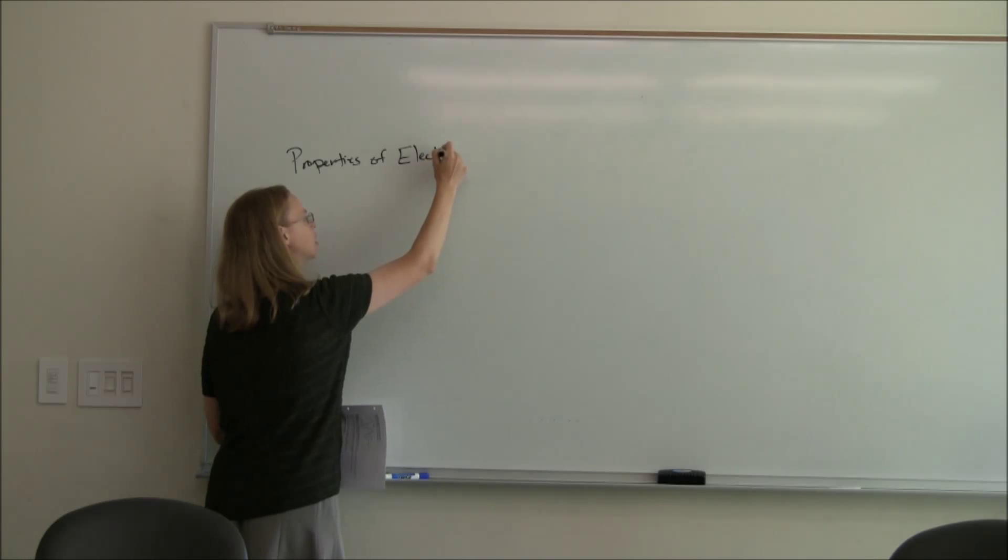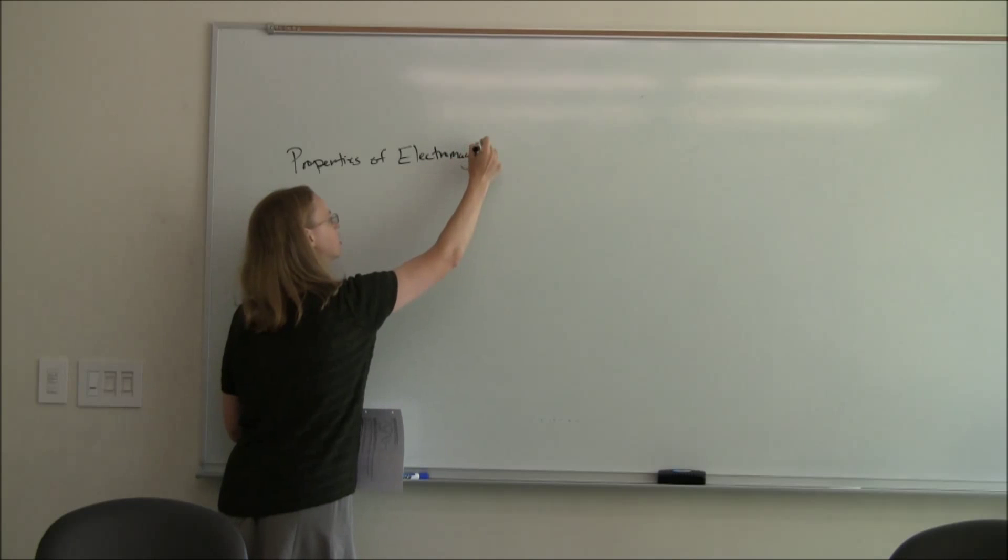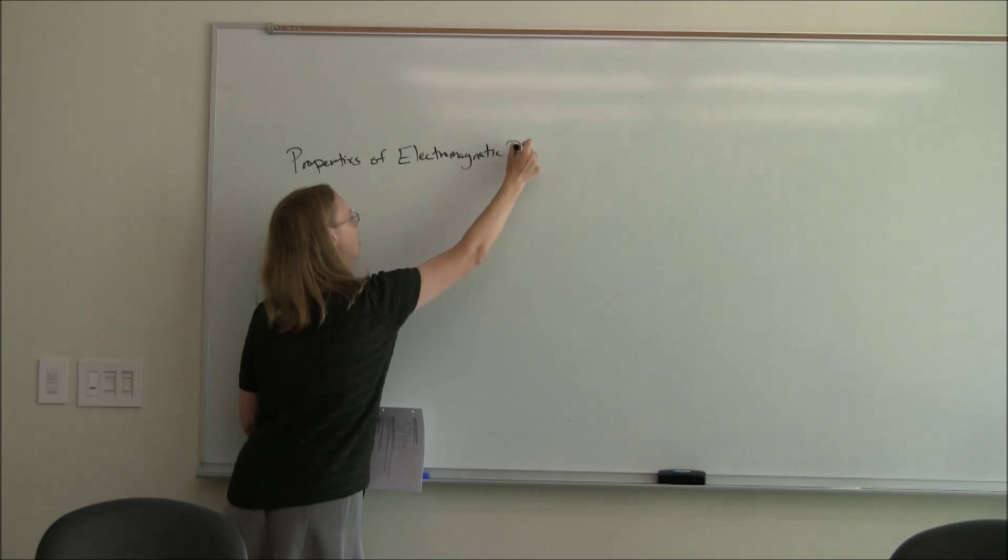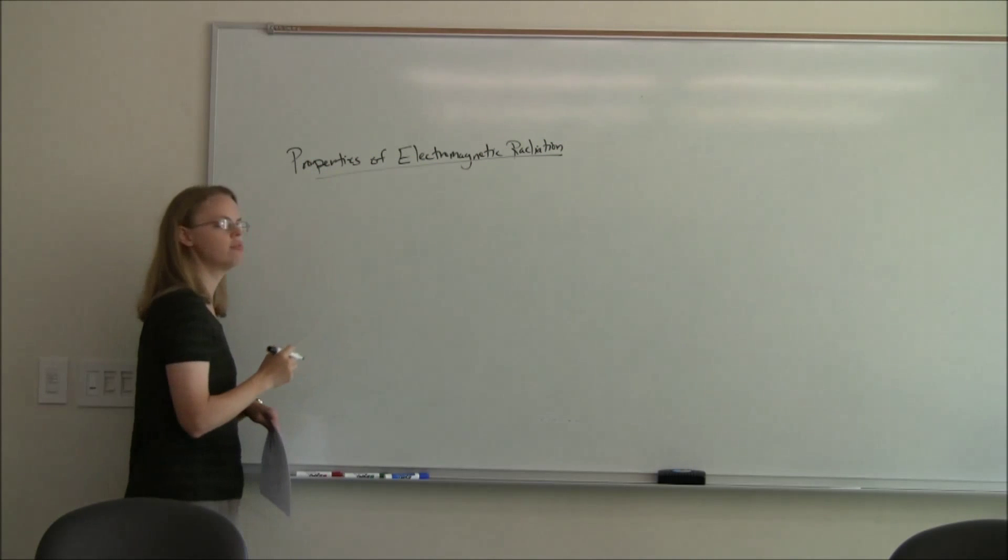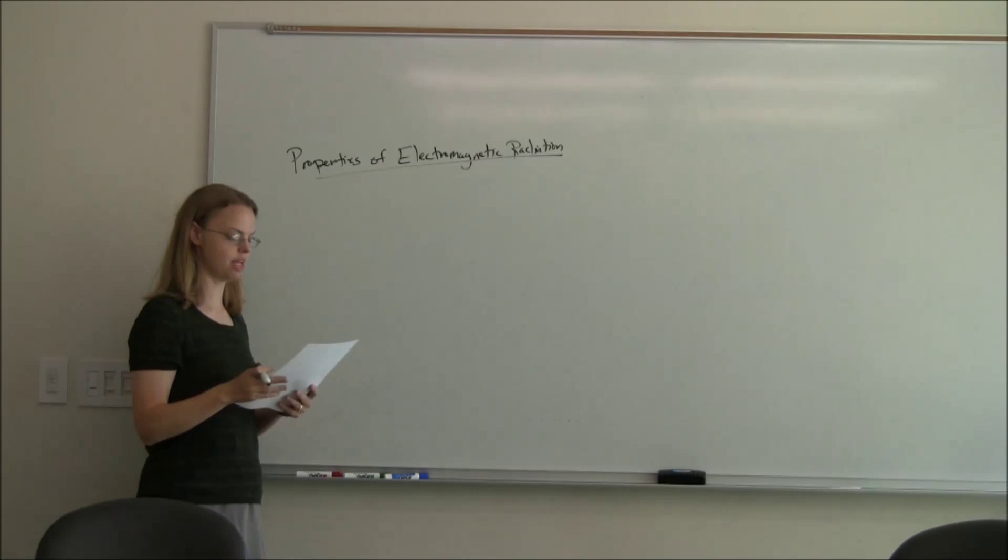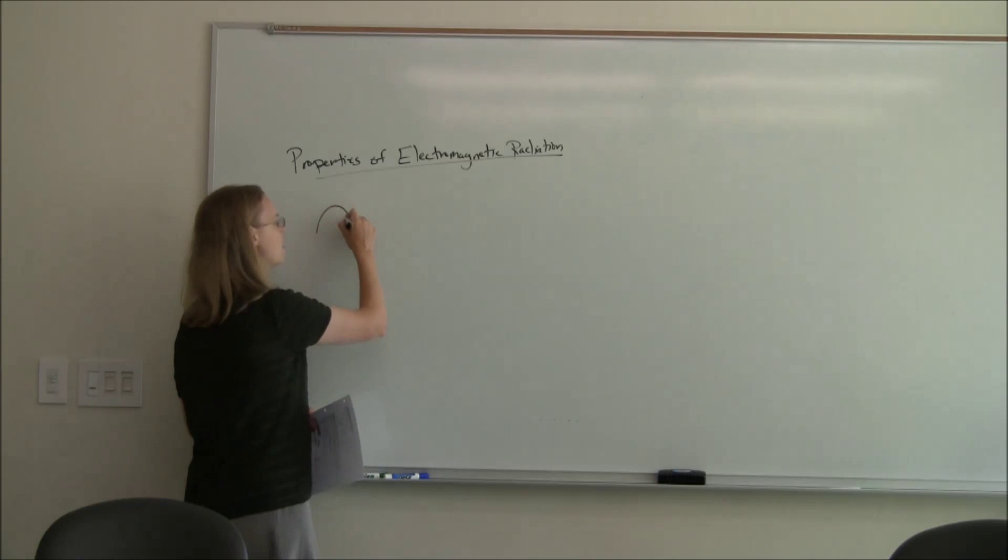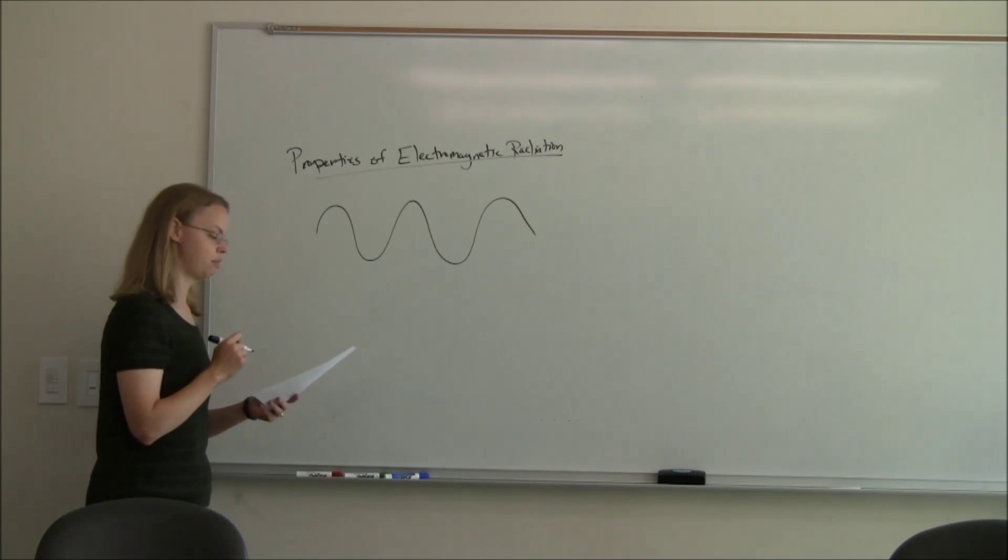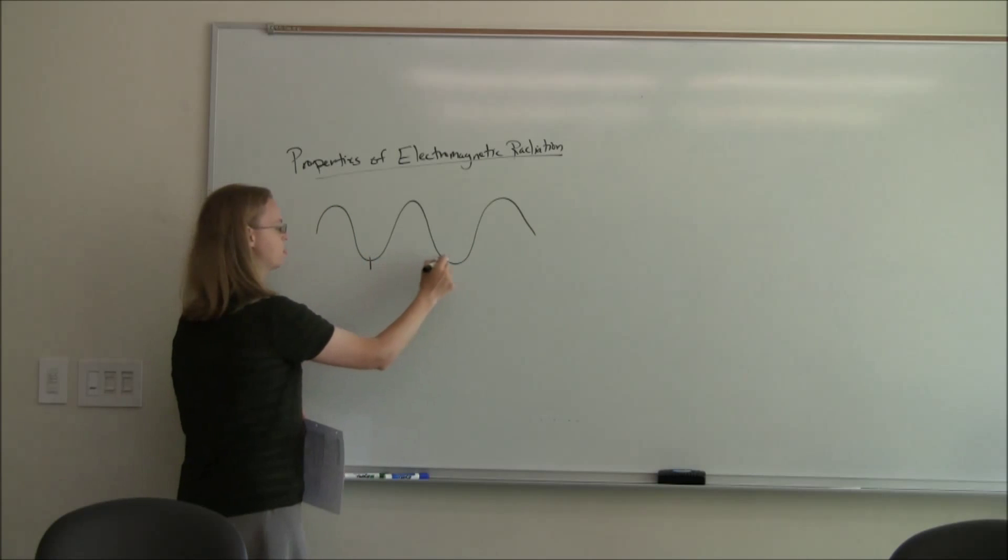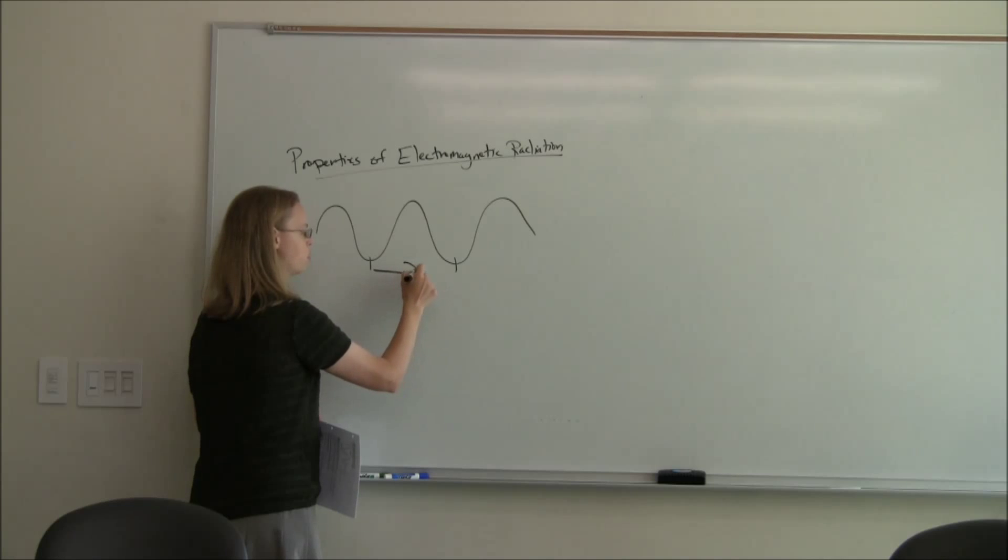We're going to be talking about the electromagnetic spectrum, and I wanted to remind us of just a few properties of electromagnetic radiation. Hopefully these are things you know, but let's think about it. Now we can describe light as a wave. We can describe it as a sine wave, and if we do that, the distance between two waves is the wavelength.